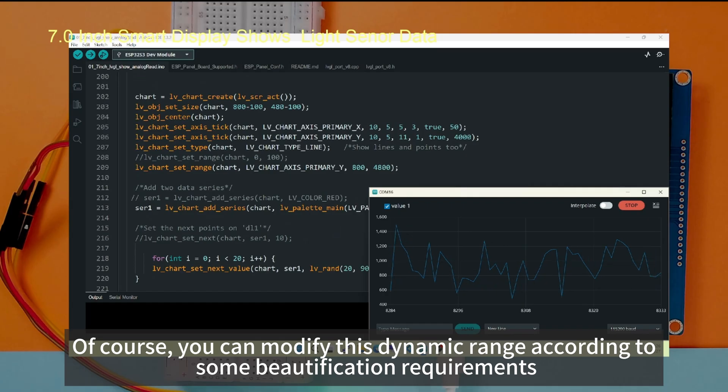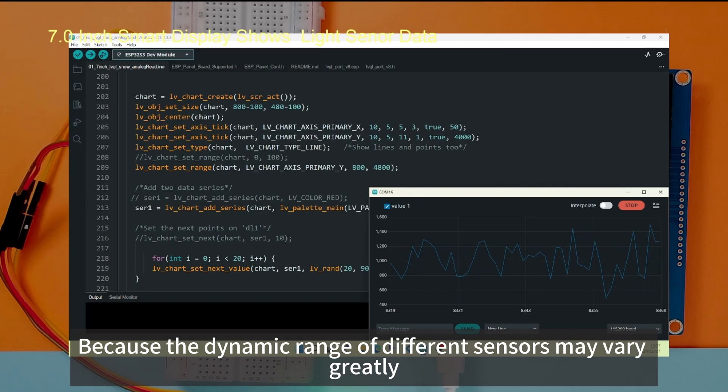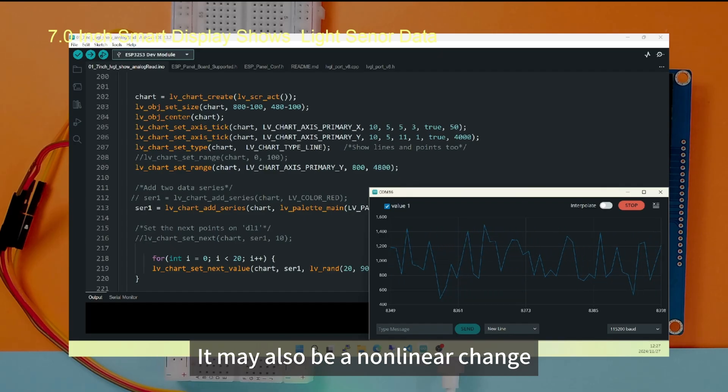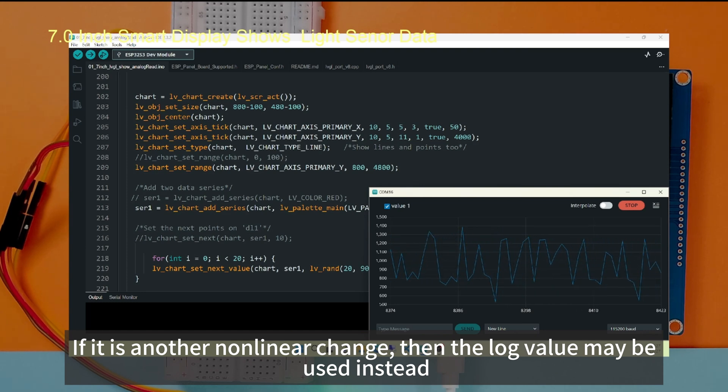Of course, you can modify this dynamic range according to some beautification requirements. Because the dynamic range of different sensors may vary greatly, including our sensors, it is a linear change. It may also be a non-linear change. If it is another non-linear change, then the log value may be used instead.